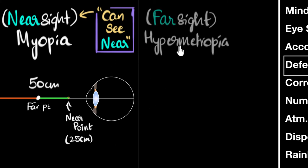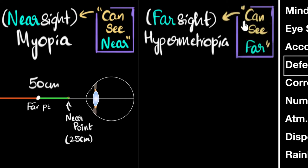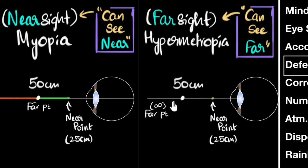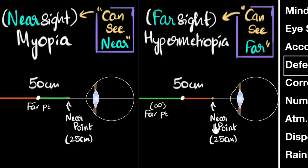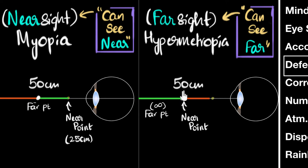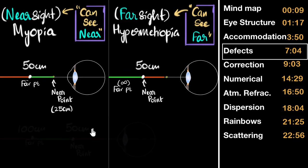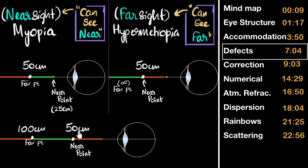The second defect is the exact opposite: hypermetropia, or farsightedness, meaning the person can see things which are far away. For example, if someone can see things farther than 50 centimeters but cannot see anything closer than 50 centimeters, that person is hypermetropic. Their near point has been shifted — it's no longer 25 centimeters, it's 50 centimeters. For a hypermetropic person, the near point gets shifted while the far point remains fine.